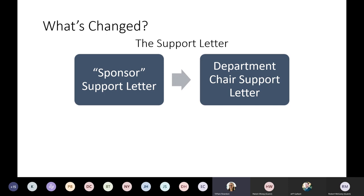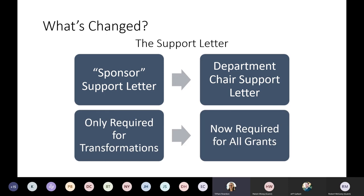The support letter has changed. We used to ask for a sponsor support letter with the idea that it would come from the office in charge of the financials of the grants. But over time we've seen a need to specify departmental leadership support. Now that support letter should specifically come from the department chair, or if the department chair is named on the grant, their immediate supervisor — a dean or provost. We also used to only require these for transformation grants, but now they're required for all grants, including continuous improvement, because we want to see that your project is supported by the people who schedule your courses and make policies on required materials.